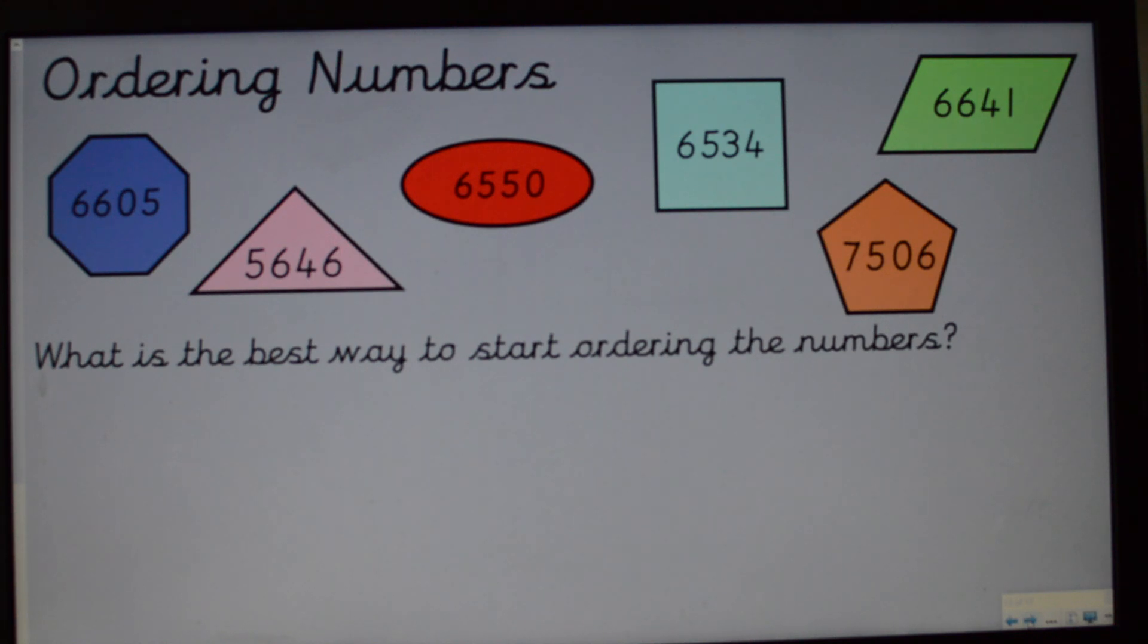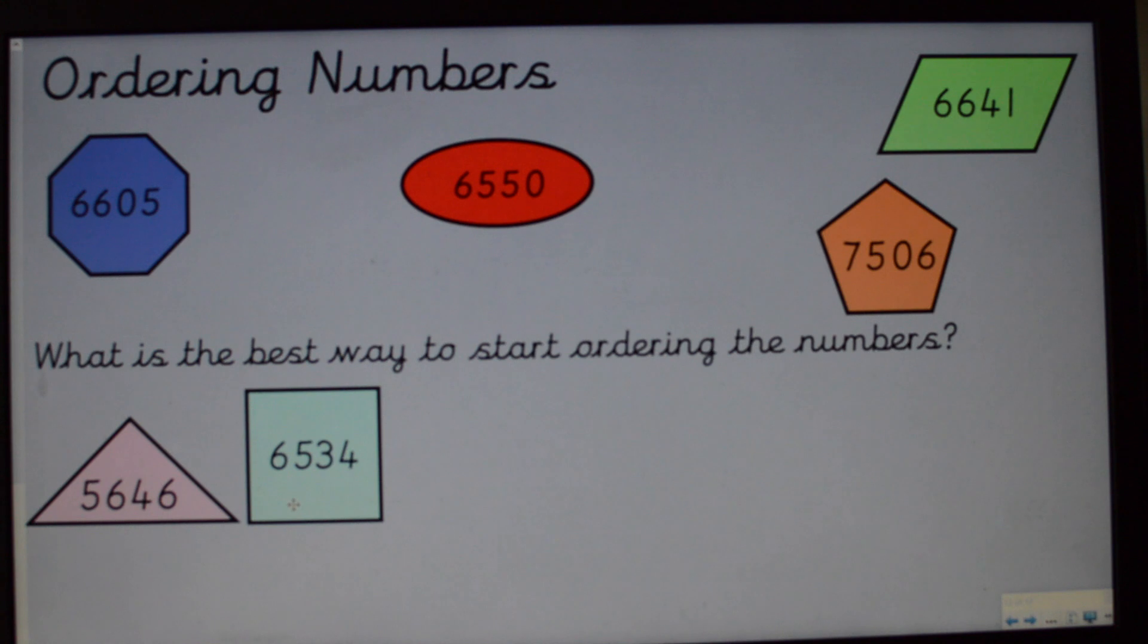So having a look at these six numbers here, which one is the smallest? Right, one of these shapes has only got five thousands. Can you see it? It's the triangle. So our first number is going to be five thousand, six hundred and forty-six. Now, I need to have a look for the next number, but I can see that four of the shapes start with six thousand, so now I need to move across to the hundreds column. Two of these numbers have got five hundreds, and two of them have got six hundreds. So I'm going to look at the two shapes here with five hundreds. I'm going to move across now to the next column, the tens. The oval has got five tens, whereas the square has only got three tens, so this square is the smaller of the two, six thousand, five hundred and thirty-four. And I know that my oval must come next.